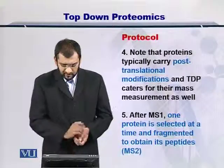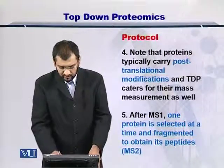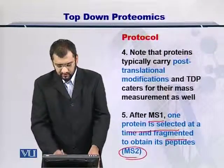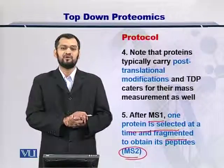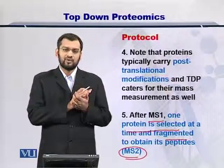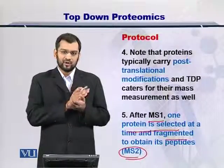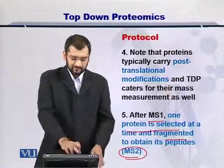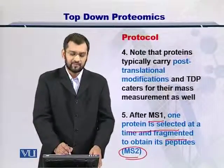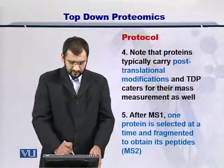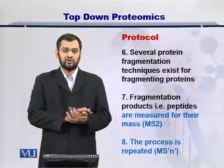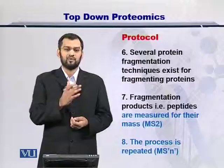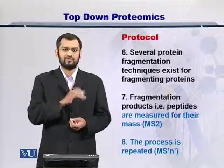So once after MS1, the protein is selected and fragmented, you have the molecular weight of the peptides from MS2. The entire protein's molecular weight is measured in MS1, its peptides are made in MS2, and then if you can select the peptide, you can also continue fragmenting the peptide and obtaining MS3, MS4, and so on and so forth till MSN.